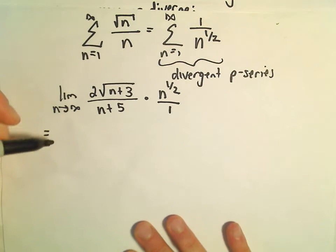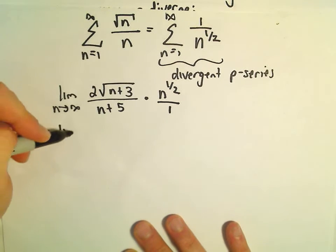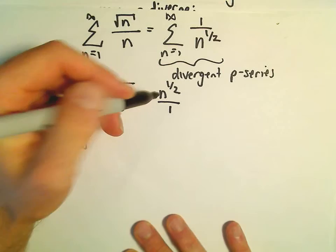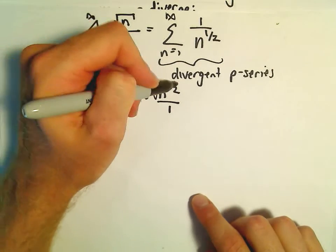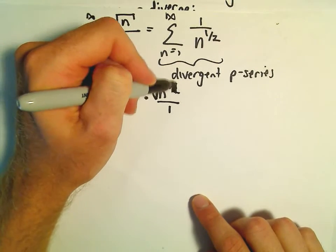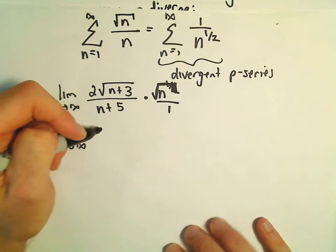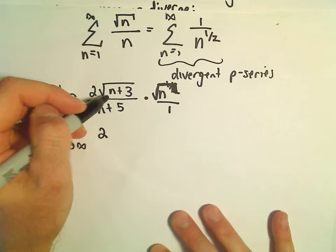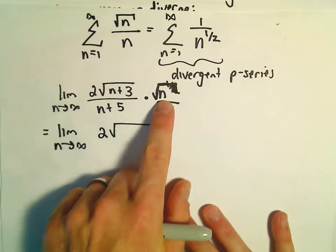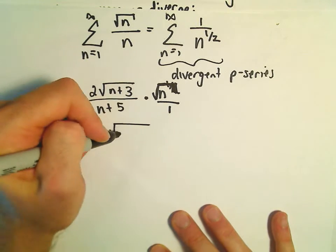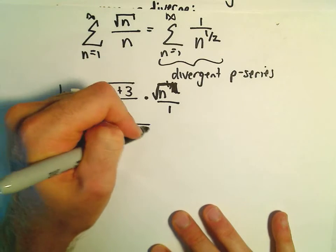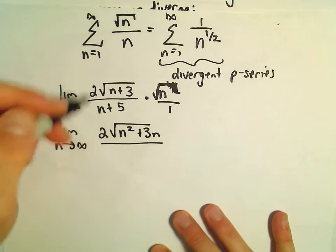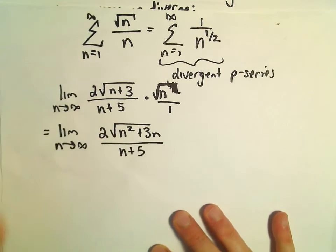We can simplify this a little bit without too much trouble. This is the limit as n goes to infinity. Again, n to the 1 half, that's the same thing as having it all under square root. We'll have the square root of n times the square root of n plus 3. So we can multiply the n times the n plus 3. That'll give us n squared plus 3n. And then we've got n plus 5 in the denominator.